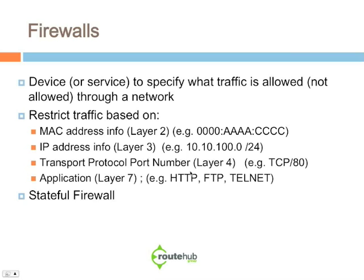More commonly, you can also filter based on the port number — such as only allowing port 80 through, or port 6778 through. You can also use application firewalls, where you can block things based on what you see inside HTTP messages, FTP, or even Telnet. You can definitely restrict traffic on a wide variety of things. All firewalls, such as SonicWall, Cisco ASAs, and Juniper firewalls, are stateful firewalls.